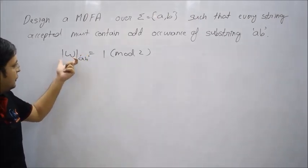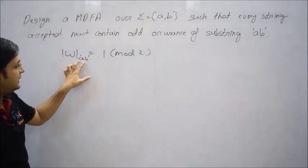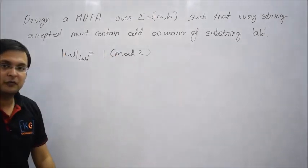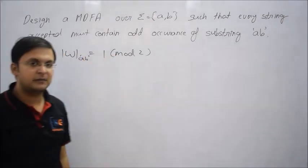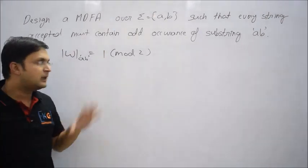They are concentrated not on the total length nor on the specific symbol but on a substring. So the occurrence of that substring AB, and what is acceptable? 1 mod 2, so odd occurrence is acceptable.